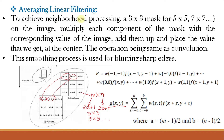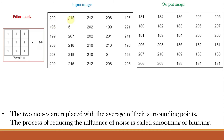Before understanding how to apply the averaging filter, it is important to understand what frequencies mean in an image. Just as in electrical signals where more oscillations mean higher frequency, the same concept applies to images — but instead of voltages we have gray levels. If the gray level changes slowly over a region, it is a low frequency region; if it changes rapidly, it is a high frequency region. For most images, the background is low frequency and edges are high frequency. Low pass filtering blurs edges; high pass filtering removes the background.